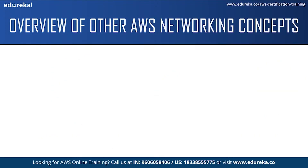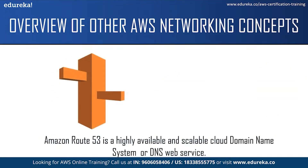Now let us move on to our next service, which is Route 53. Amazon Route 53 is a highly available and scalable cloud Domain Name System, or DNS, web service. It is designed to give developers and businesses a reliable and cost-effective way to route end users to internet applications by translating names into numerical IP addresses. This can be used for computers to connect to each other.